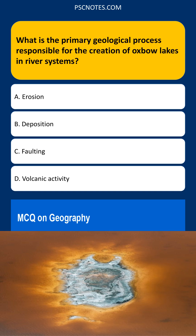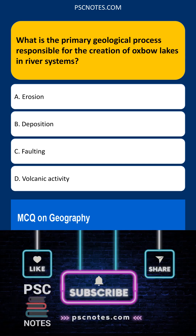Erosion is incorrect because although erosion plays a vital role in forming the meander itself, it is the deposition of sediment that ultimately isolates the meander and results in an oxbow lake.